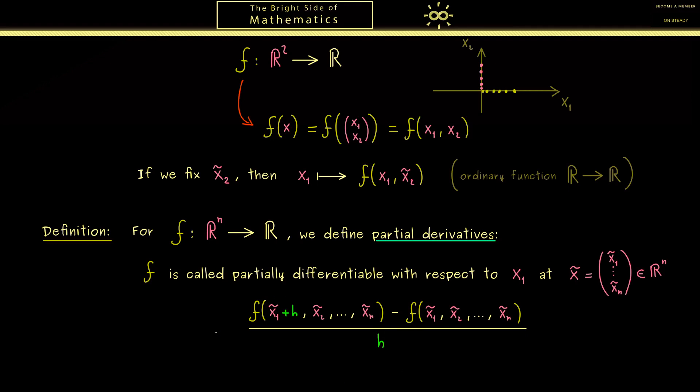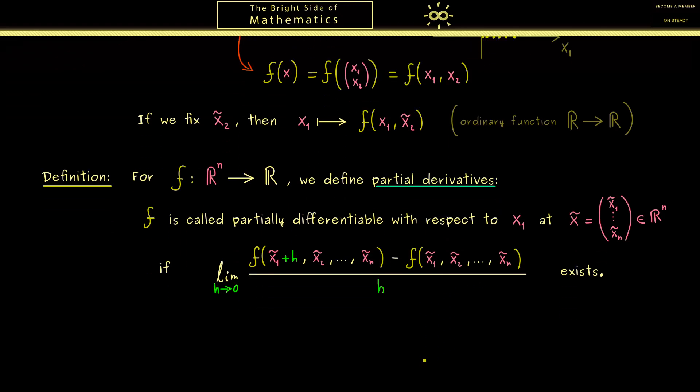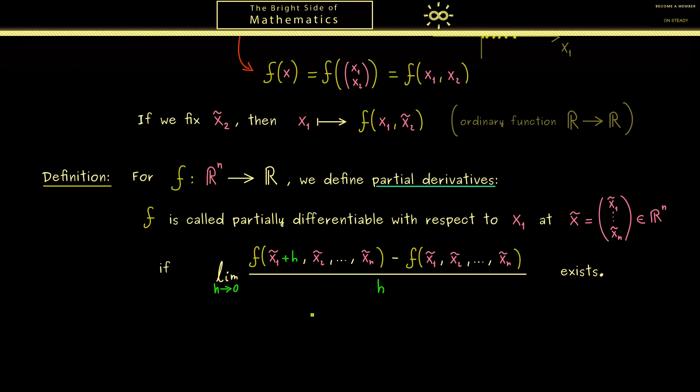And then when we send h to 0, and if this limit exists, we have our derivative. So in summary, if this ordinary differential quotient where all the other variables are fixed exists, then we call f partially differentiable with respect to the given variable x₁. Moreover, there you should see it's no problem at all to write down this definition for all the other variables, like x₂, x₃, and so on. For this reason I don't want to do it here explicitly, but rather talk about different notations we have for this differential quotient here.